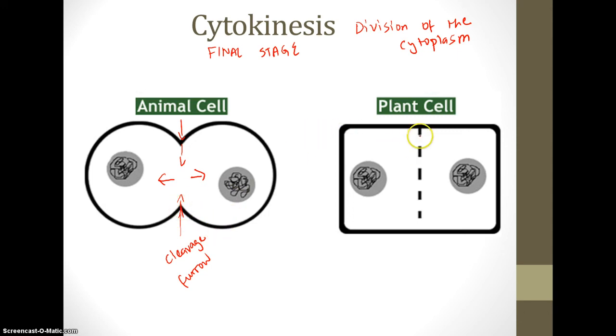In plant cells, a cell plate is formed. This is the cell plate, and what it does is grow outward, which splits the plant cells into two parts.